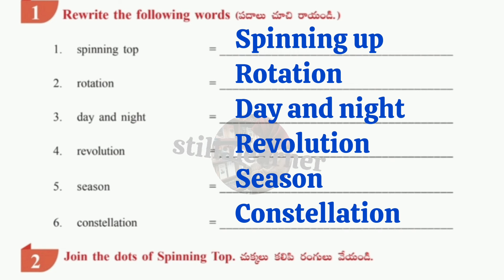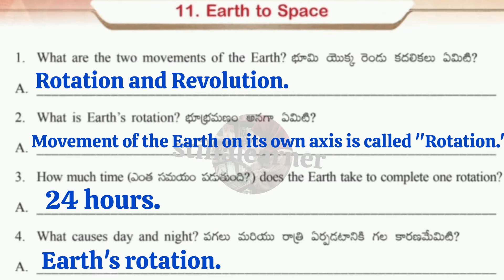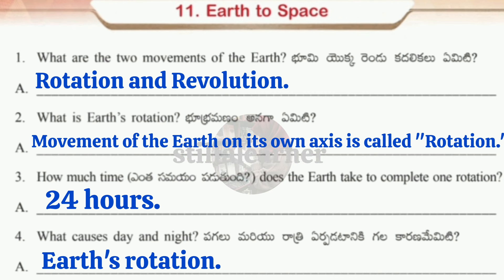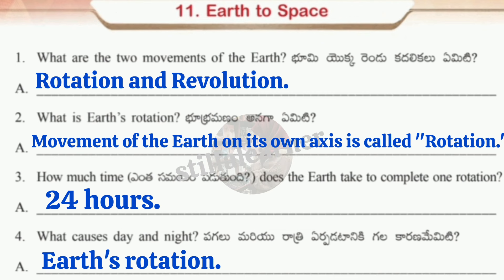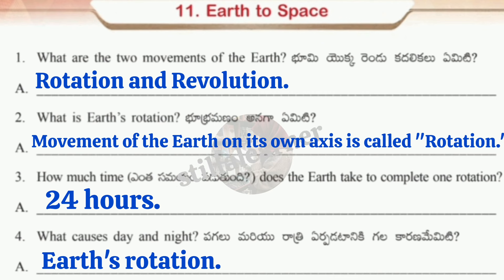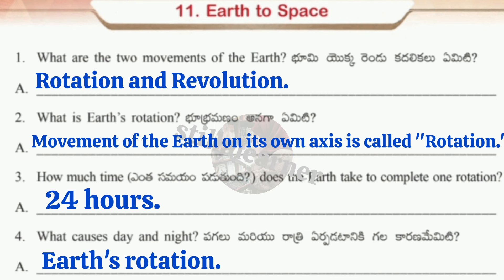Worksheet 6 questions: What are the two movements of earth? Answer: Rotation and Revolution. What is earth's rotation? Answer: Movement of the earth on its own axis is called rotation. How much time does the earth take to complete one rotation? Answer: 24 hours. What causes day and night? Answer: Earth's rotation.